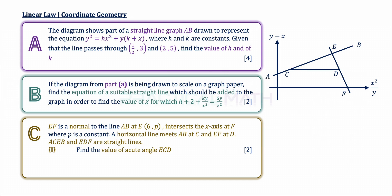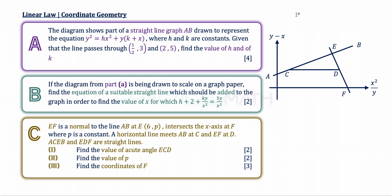In C part 1, find the value of acute angle ECD — that's a two-mark question. In C part 2, find the value of P, which is part of the coordinates of E. In C part 3, find the coordinates of F — that's a three-mark question. You might want to pause this video to give this question a try, and when you're ready, keep watching.